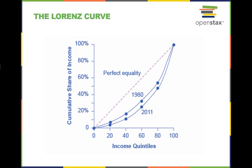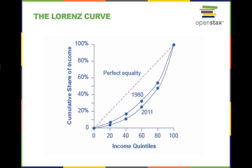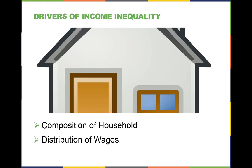Income inequality is a relative matter depending on where you live and your income level — a person considered rich in Uruguay may not be considered so in Sweden. One way to look at income inequality is to divide individuals into quintiles or fifths by income level. The Lorenz curve graphs the cumulative shares of income received by everyone up to a certain quintile. The income distribution in 1980 was closer to the perfect equality line — the dotted 45-degree line — than in 2011, meaning U.S. income distribution became more unequal over time.